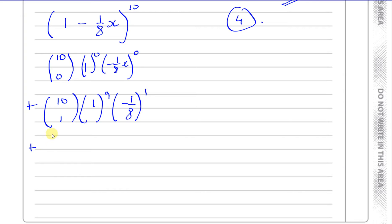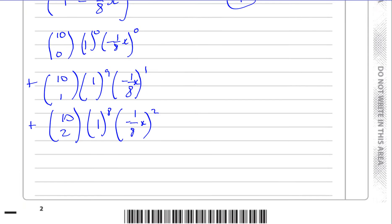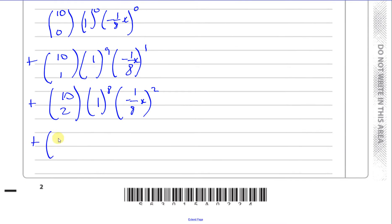And then the third term, you'll have 10 and 2, and this will be 1 to the power of 8, and this will be minus 1 over 8x to the power of 2. And the final term will be 10 and 2, and you'll have 1 to the power of 7, and you'll have minus 1 over 8x to the power of 3. This is called the NCR method.